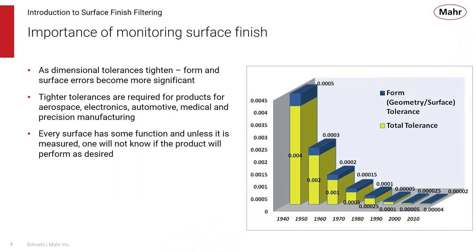Why is it important to monitor surface finish? As dimensional tolerances have tightened over the years, form and surface errors have become more significant, and tighter tolerances are required for products in aerospace, electronics, automotive, medical, and precision manufacturing. Every surface has some function, and unless it is measured, one will not know if the product performs as desired.